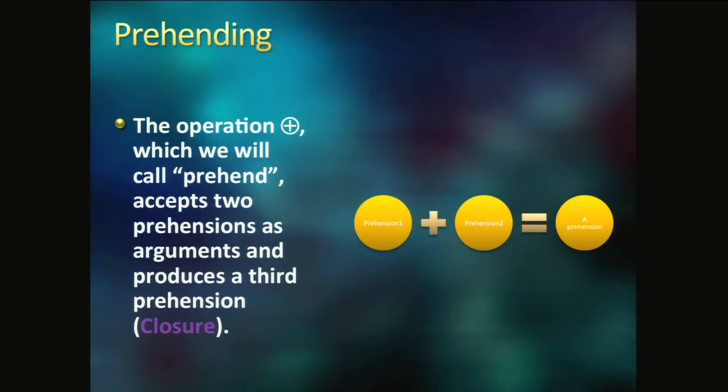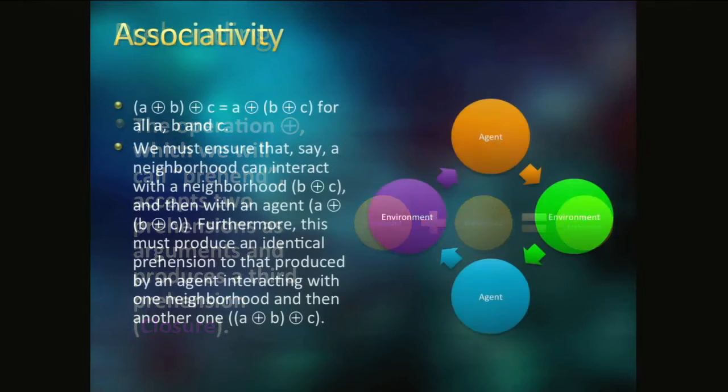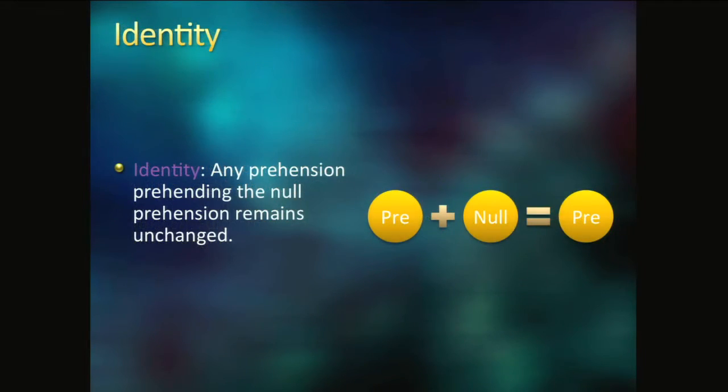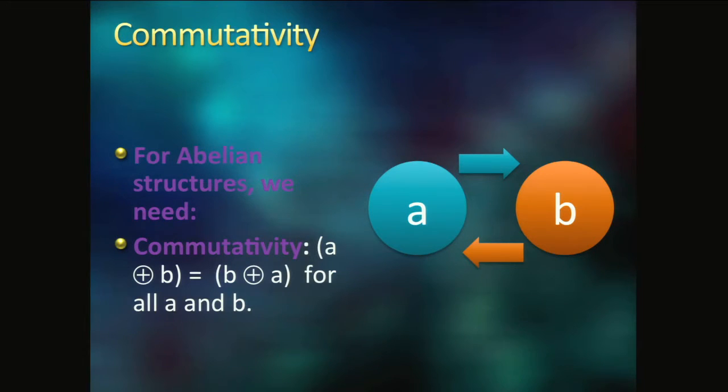We have some basic rules. Looking at this in terms of abstract algebra, this gives us some rules. For instance, we have closure. A prehension and a prehension will always give us another prehension. Associativity, it doesn't matter what order, how we group these things. We can take prehension A plus B plus C and that'll equal A plus B plus C. There's an identity element. There's a null prehension. We didn't see anything in the environment of interest to us. So, our state doesn't change, basically.